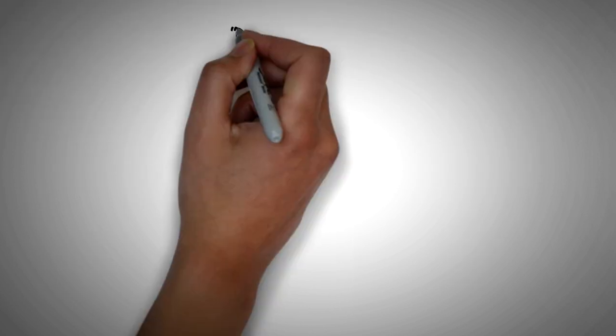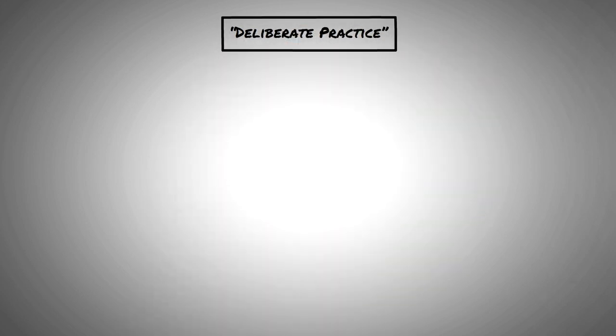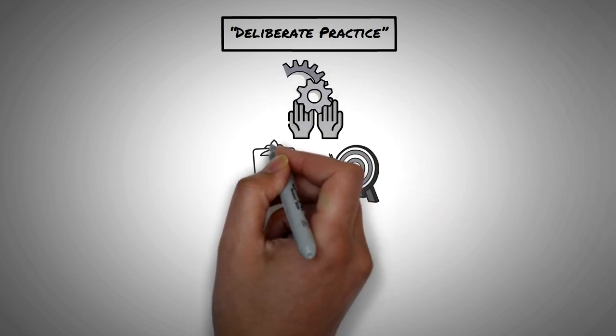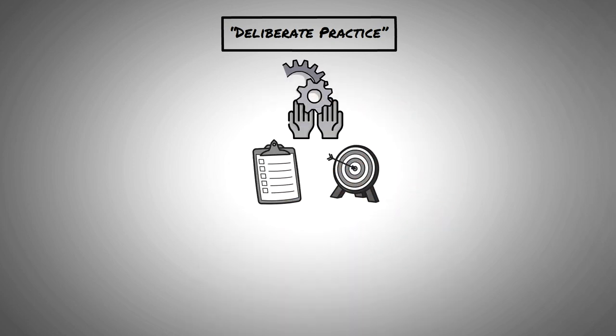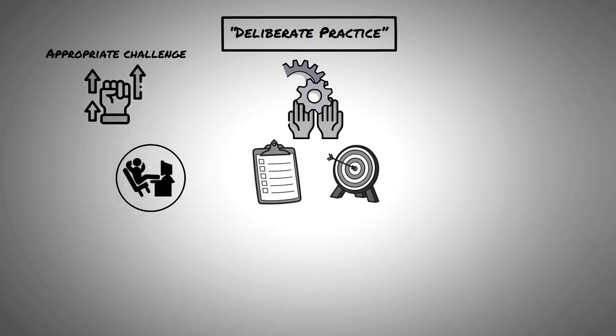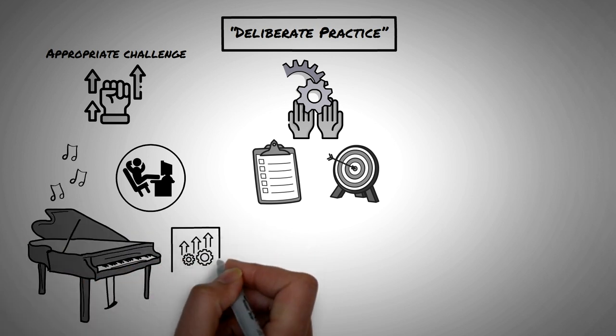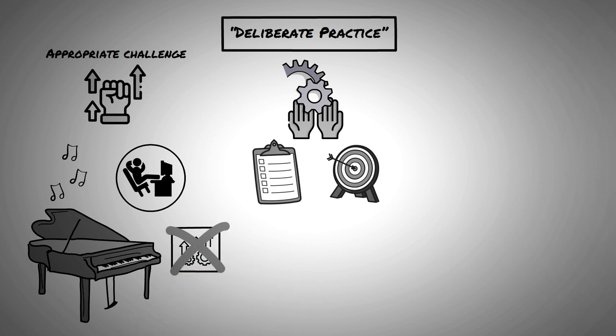Cal Newport suggests you engage in what he calls deliberate practice. Deliberate practice refers to a special type of practice that is both purposeful and systematic. For something to fall into this category, it needs to follow these two requirements. One, appropriate challenge. This means you need to push yourself beyond your comfort zone. Repeating what you're already good at does not make you improve. For instance, if you play the same songs on the piano for 20 years, it doesn't mean that you're getting better. You need to constantly challenge yourself by playing new songs or playing them faster.